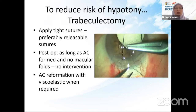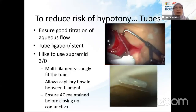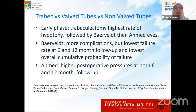AC reformation is only indicated when the AC is flat. If you put an unvalved tube, good titration of AC is mandatory on the table — either ligate or stent the tube. Studies have shown that between trabeculectomy and valved and non-valved tubes, trabeculectomy normally causes hypotony, but the Baerveldt has been shown to have the lowest failure rate long-term.